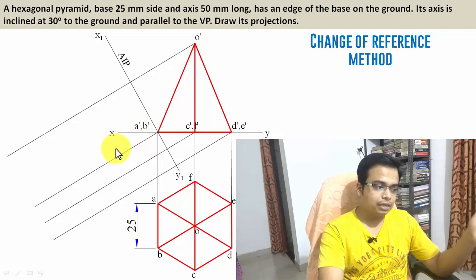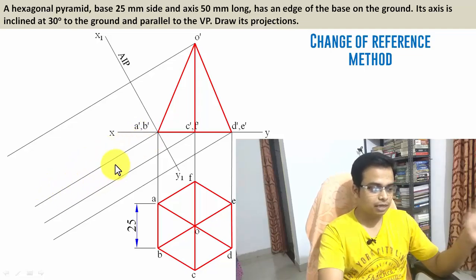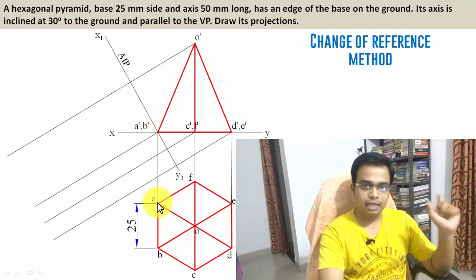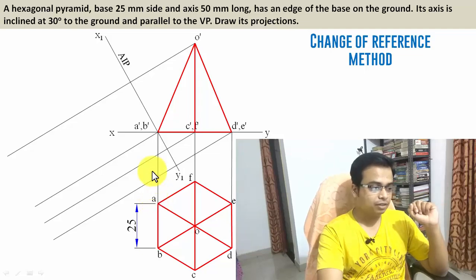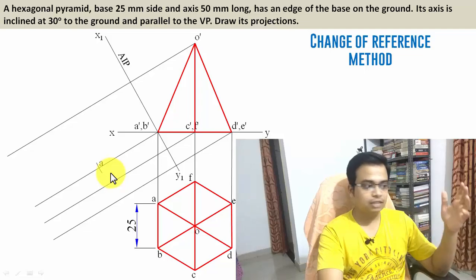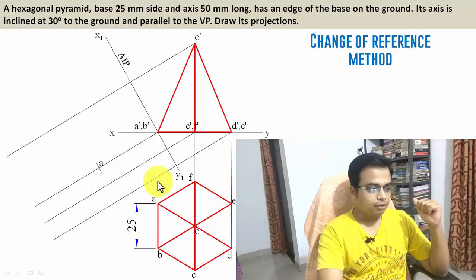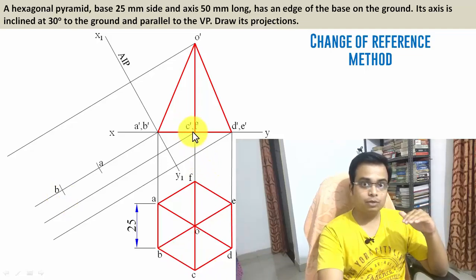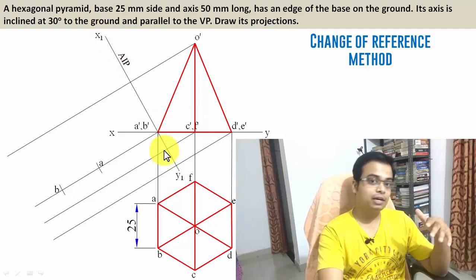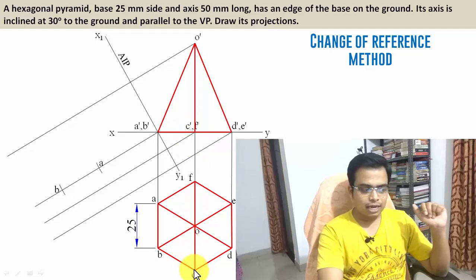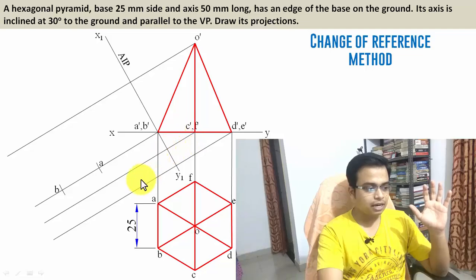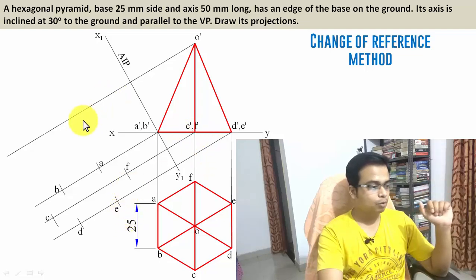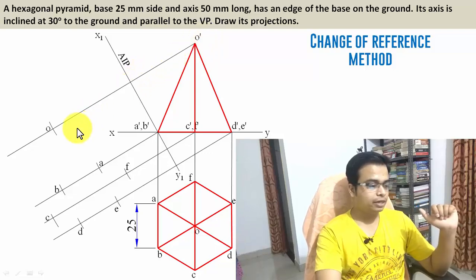Points A and B are going to be lying on this line. Keep one leg of the compass here, the other leg at the point — that's the radius of the arc — and with this as the center, cut an arc: that's point A. Similarly for point B. For point C: take the arc with respect to XY and put it up with respect to X1Y1. Mark the remaining points the same way, and finally mark O as well, taking its distance from XY as the radius and cutting the arc.